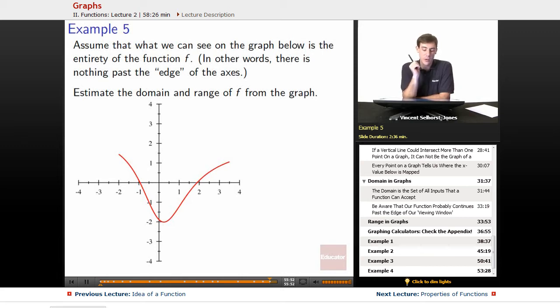Assume that what we can see on the graph below is the entirety of the function f. In other words, there is nothing past the edge of the axes. We're looking through that window, but we've been told there's nothing interesting past the edges of the window. So this graph here is the entirety of the function f. Now we want to estimate the domain and range of f from the graph.